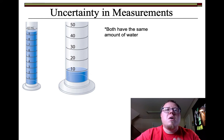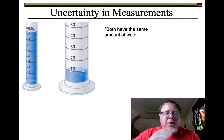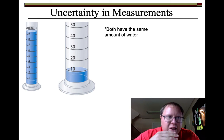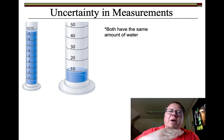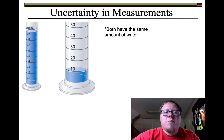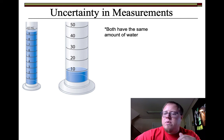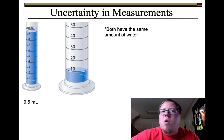Now I'm going to try and read them. This first graduated cylinder has markings for 9 and markings for 10. It doesn't have anything in between, so since it's right between them I'm going to say it's about halfway between them. I can estimate it as 0.5, so I would give this 9.5 milliliters.